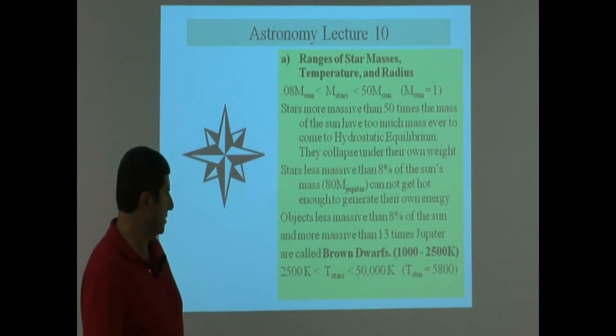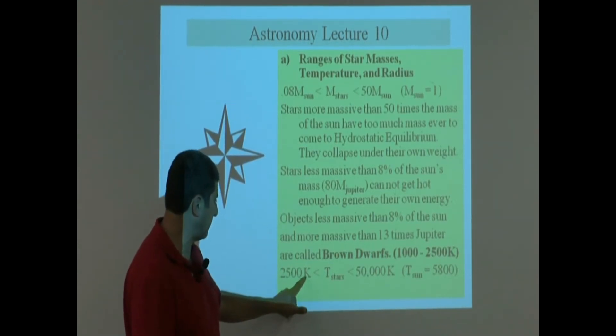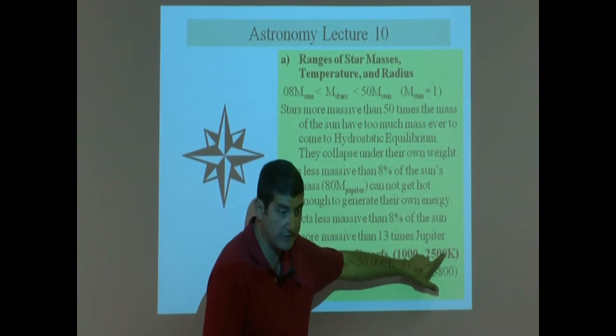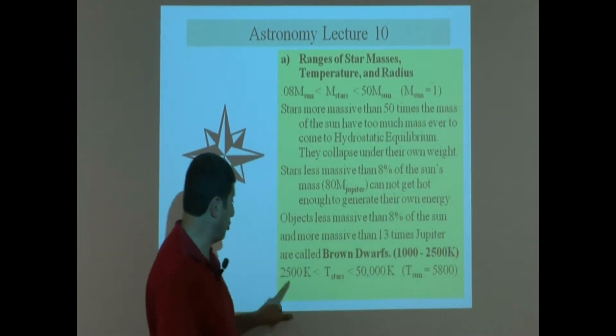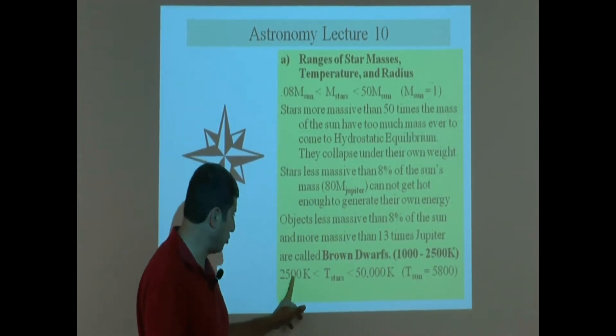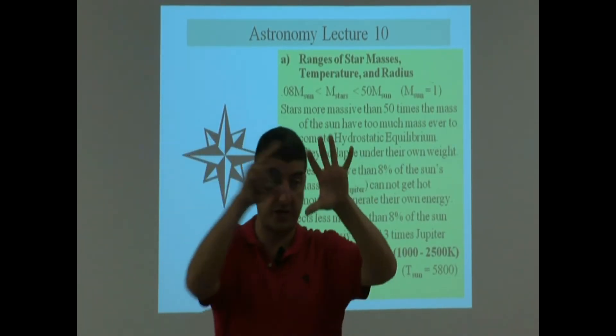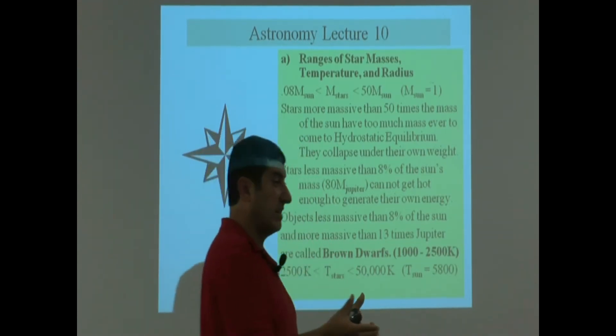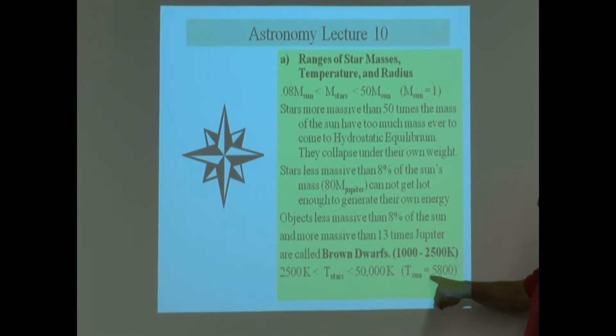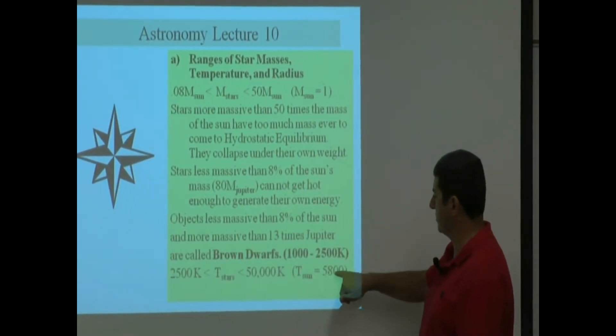What is the temperature of stars? The coldest star that is a full-fledged star is 2,500 Kelvin. Notice that the brown dwarf ends at 2,500 Kelvin, that's the hottest brown dwarf, and the coldest star begins where the brown dwarf ends. So this is the coldest star, and about the hottest star is 50,000 Kelvin. This is at its surface. 50,000 Kelvin at its surface, that's a very, very hot star. So the temperature of the sun is 5,800 Kelvin.